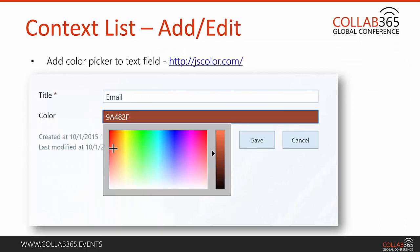Here's my context list — basically a lookup list with different contexts and their associated colors. Instead of having the user type in a hex code, I've added a color picker to the field. When they click on it, a color picker pops open so they can choose any color they want and save it. We'll take a look at that in the demo — it's a pretty easy solution to implement.